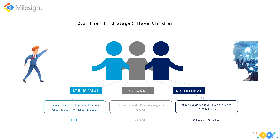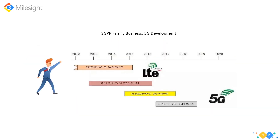The three children are: long-term evolution machine-to-machine (LTE-M), extended coverage GSM (EC-GSM), and finally the narrowband Internet of Things (NB-IoT). As mentioned, 3GPP is only responsible for developing technical specifications, so these three technologies were nurtured by network operators around the world. These three were designed on different underlying technologies — LTE, GSM, and CleanSlate — so they have different technology foundations.